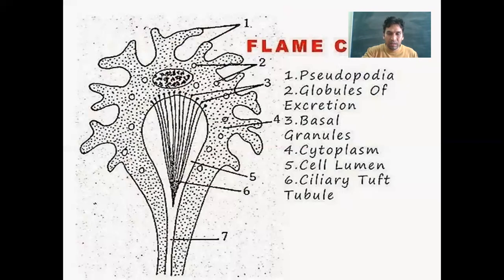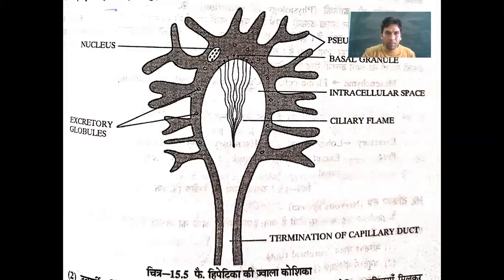We have seen that in some invertebrates, such as platyhelminthes, specialized cells are associated with excretion. We call these cells flame cells.